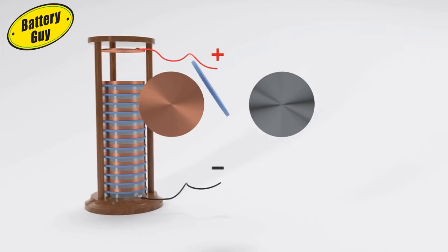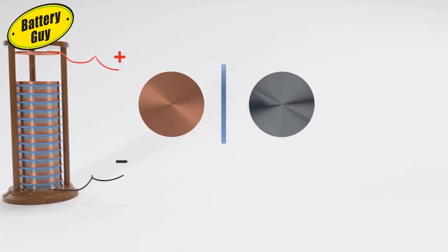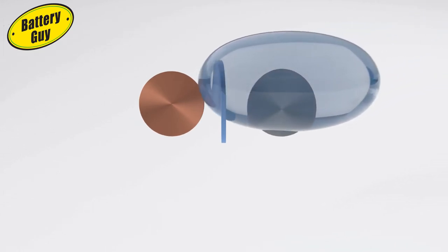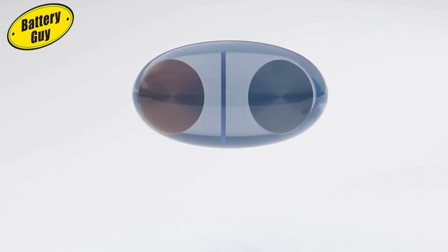The anode and cathode are kept physically apart with a separator, but for the cell to work both are placed in contact with each other via electrolyte.